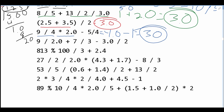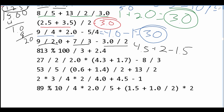In this next part, we have 9 divided by 2.0, which gives us 4.5. We're adding this to 7 divided by 3, which is 2. And we are subtracting 3.0 divided by 2, which is 1.5. This is going to give us 5.0 as our answer.